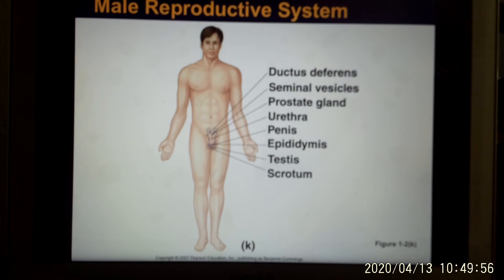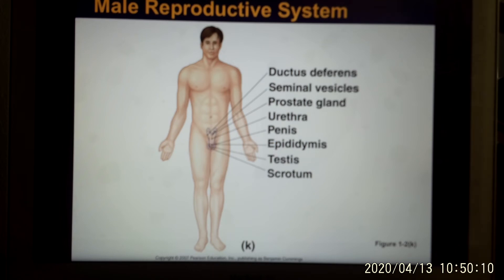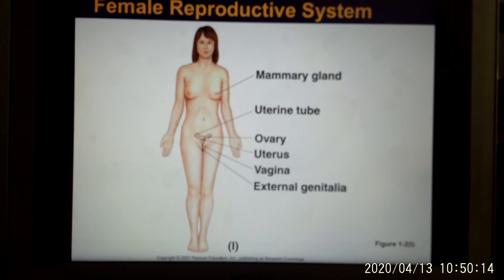The last system is the reproductive system. All the previous ten systems are the same in males and females, but this one is sexually dimorphic — that's the big word meaning male and female are different. Also, this is the only system you can remove entirely without affecting your normal physiological function, meaning you can live without this system. That's the unique part.